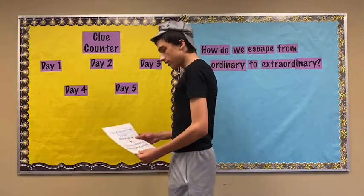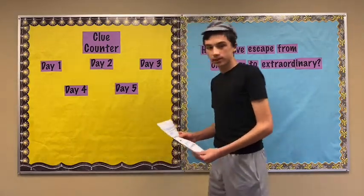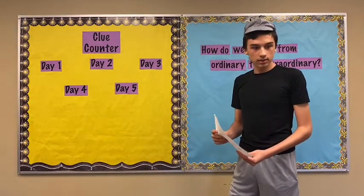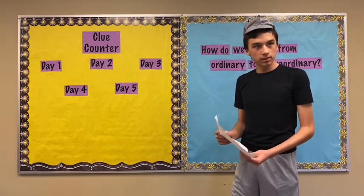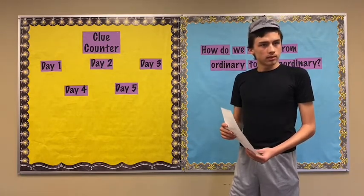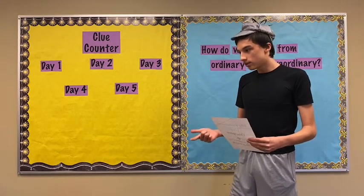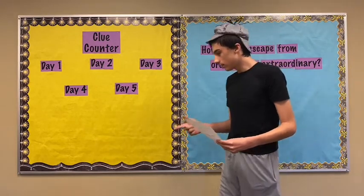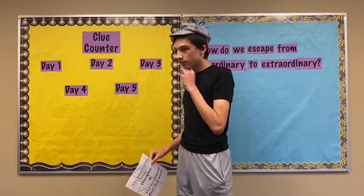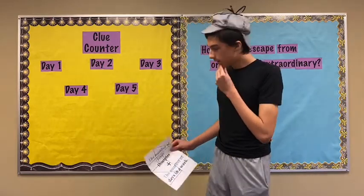So seven plus 12... seven plus 12 is... 13, 14, 15, 16, 17, 18, 19. So that's 19. So the number would be 19. All right.